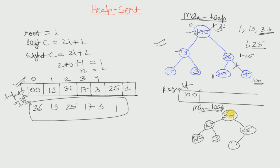Now let us pick the second element. This 36 will be replaced with the last element. We are picking the root element because we know the root is the largest element and we want to arrange in descending order. So whenever we take out the root we are taking out the largest element. This 36 will be replaced with 1, and 1 will come to the root. We unlink it and save 36 in our resultant array.